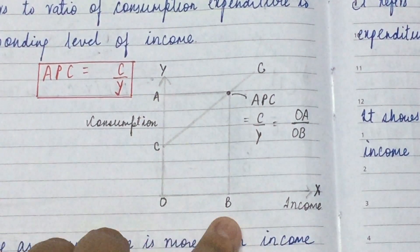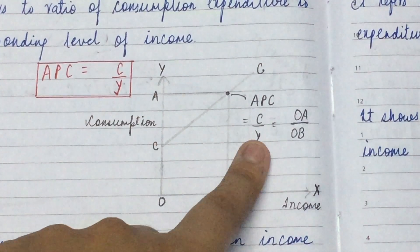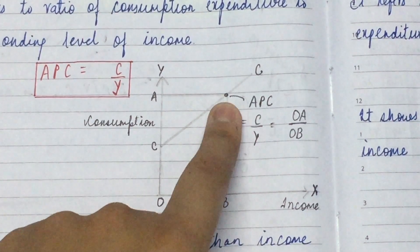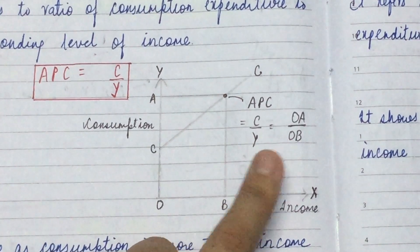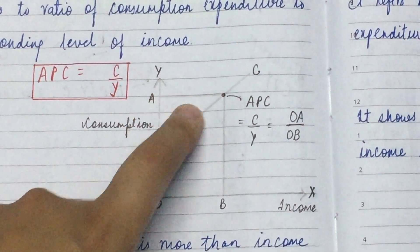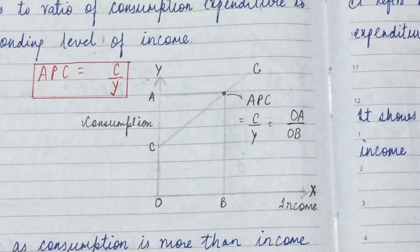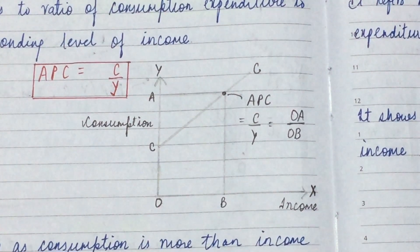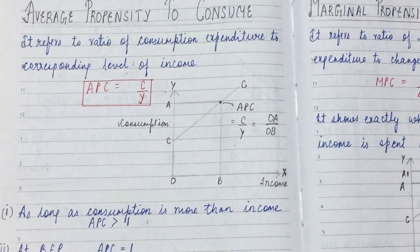We write the formula: C upon Y — consumption upon income — where the intersection is located. This is called APC. Here, OA upon OB: OA is this portion on the Y-axis and OB is this portion on the X-axis. We write them in ratio form, and from this you will understand the properties of APC.